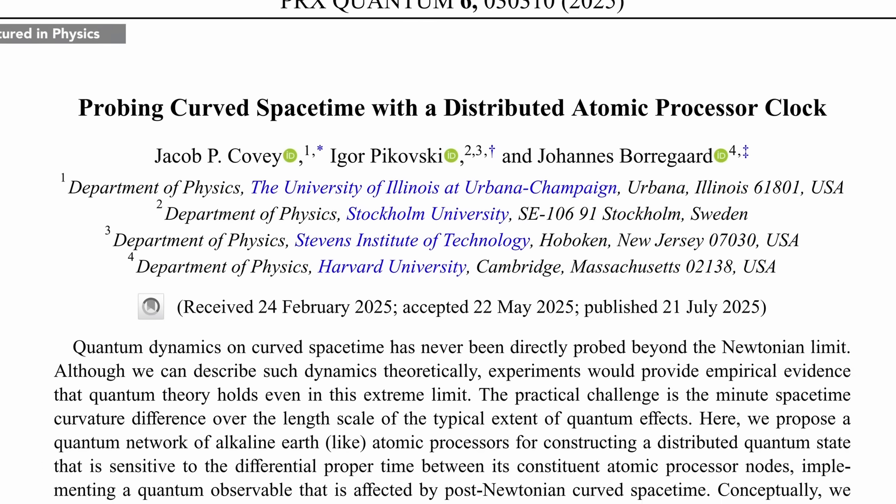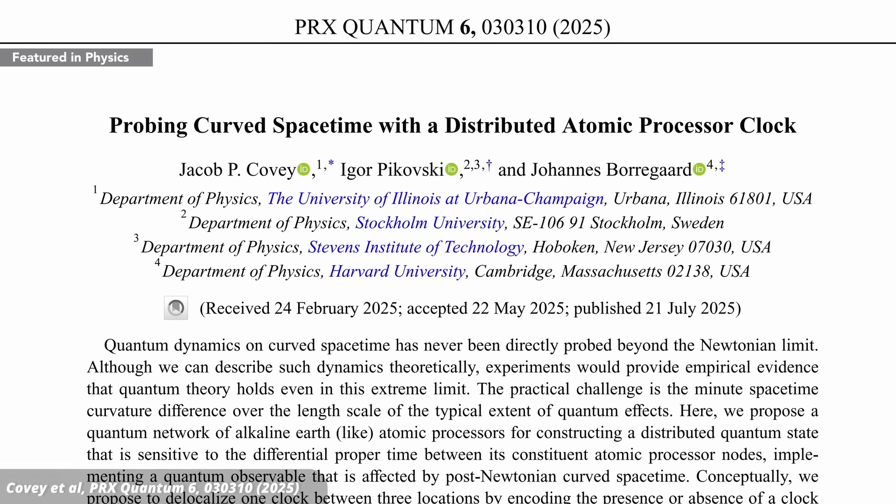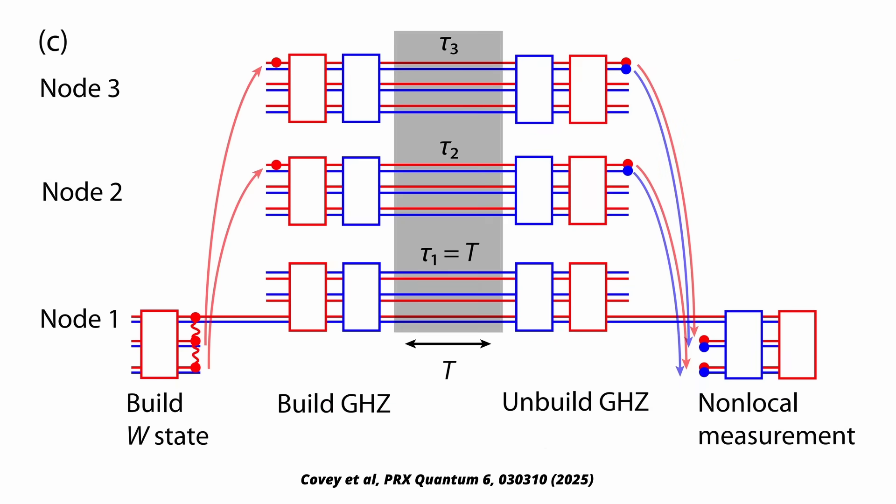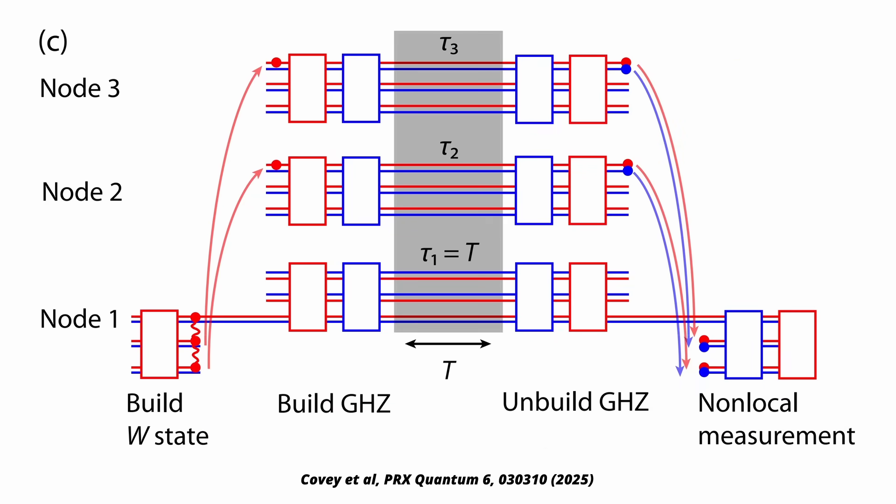The authors of the new paper say the best way to measure this effect is to use three nodes of the quantum internet, each at different elevation, and put very precise atomic clocks at each side. The ticks of these atomic clocks can be shared through the quantum internet, and that way they can be entangled. This is what you need the quantum internet for, to maintain the entanglement.